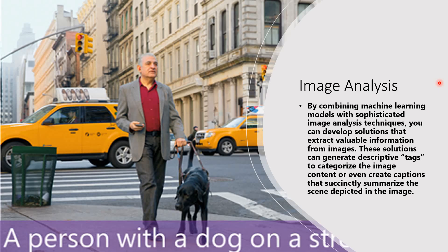Image analysis is the next thing. By combining machine learning models with sophisticated image analysis techniques, one can develop solutions that can extract information from images. These solutions can be very useful to generate tags, categorize image content, and even create captions precisely for a particular image. For example, a caption like 'a person with a dog on the street' is generated through superb image analysis.